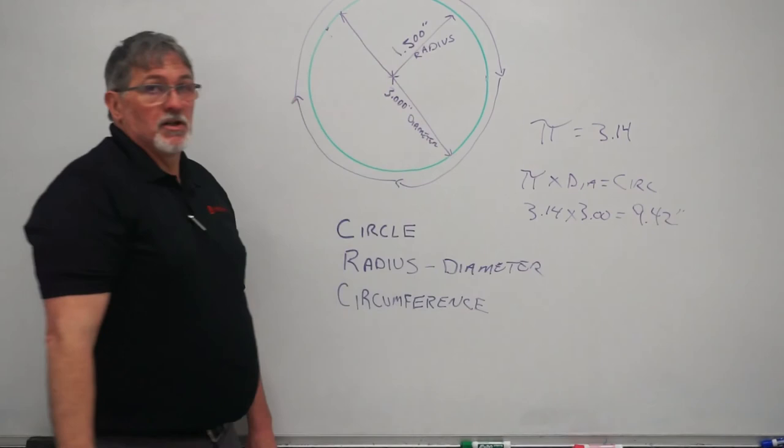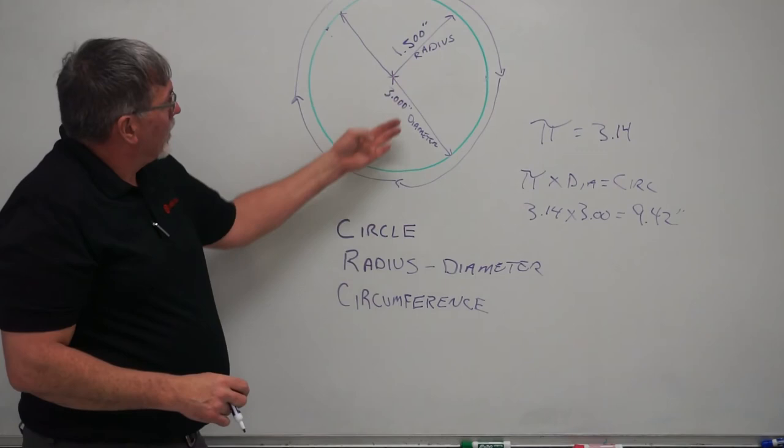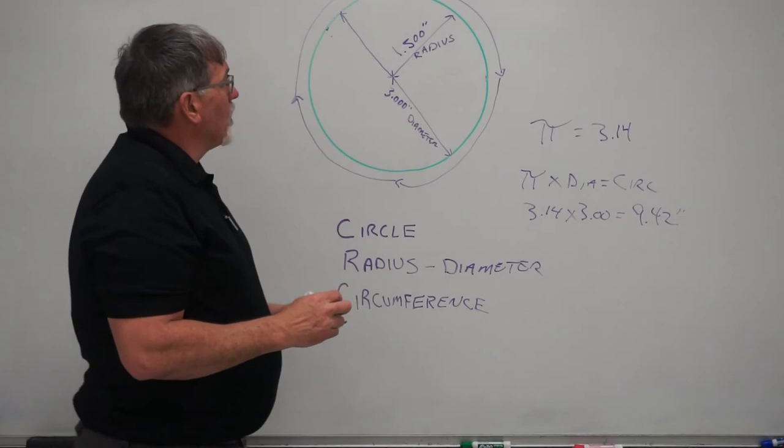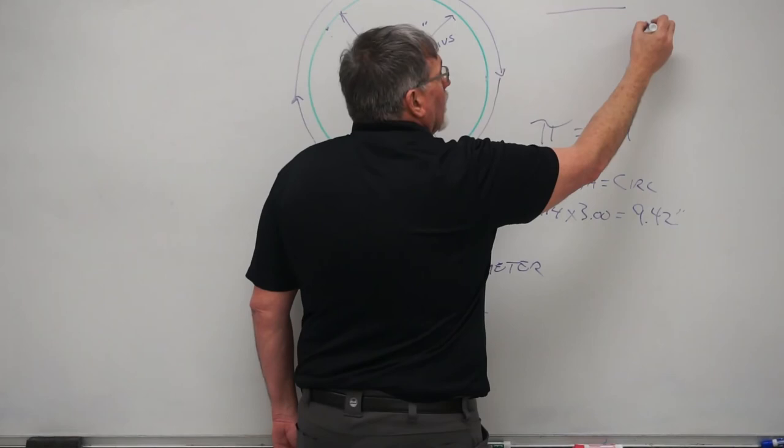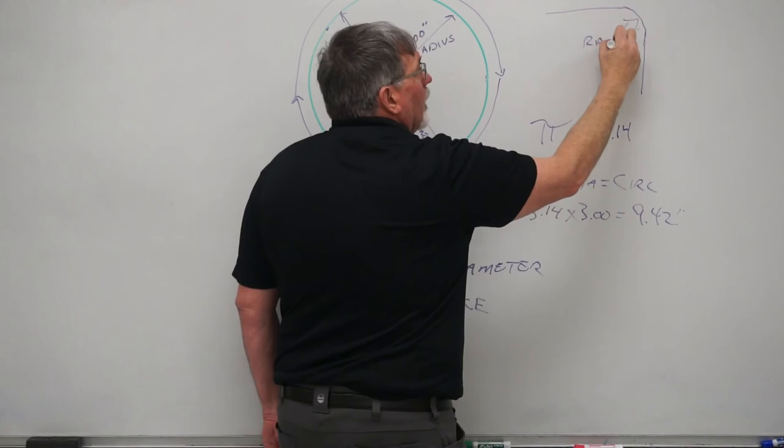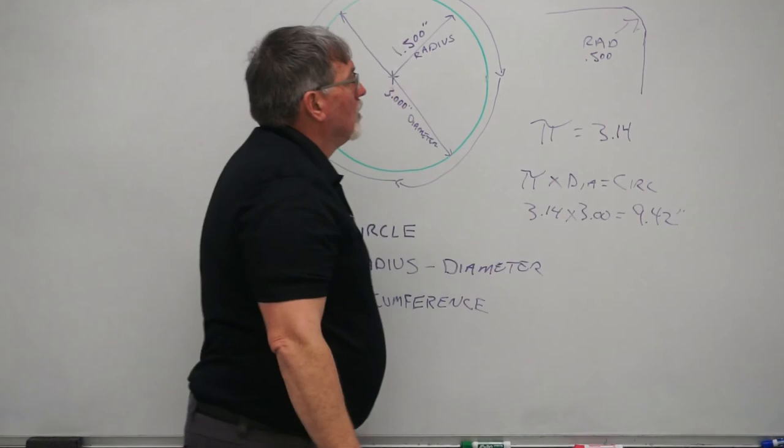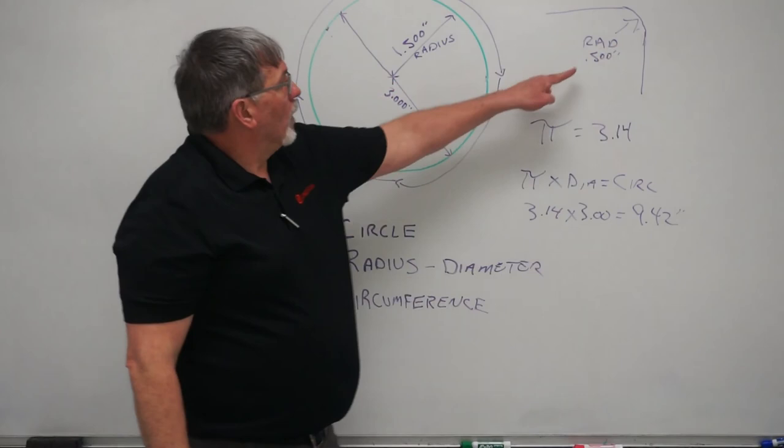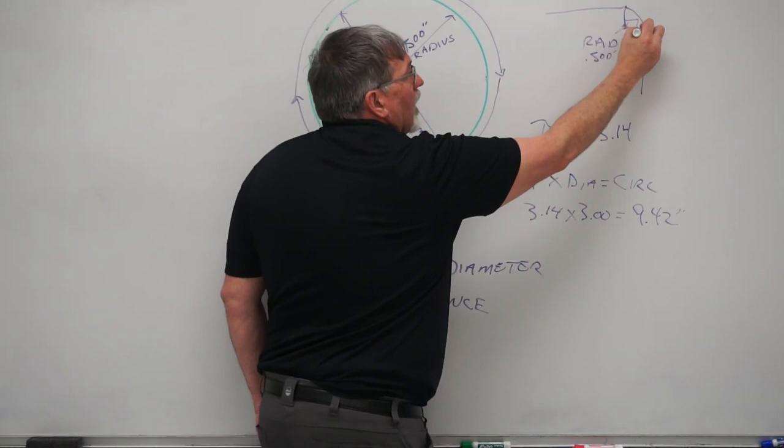So, pretty simple lesson. Radius, diameter, circle, and circumference. One place where we see this a lot in a radius for CNC programming, we'll see a part that looks like this. And it will have a radius in this circle. And it could be defined on our print as radius of whatever size. Half inch, quarter inch, whatever size the print dictates. So that will give us and tell us if the distance from this center point to here is a half inch, and from here is both a half inch.